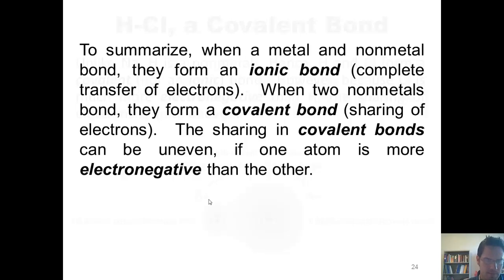To summarize, when a metal and a nonmetal bond, they form an ionic bond in which there's a more or less complete transfer of electrons. When two nonmetals bond, by comparison, they form a covalent bond in which they share electrons. The sharing of covalent bonds can be uneven if one atom is more electronegative than the other.